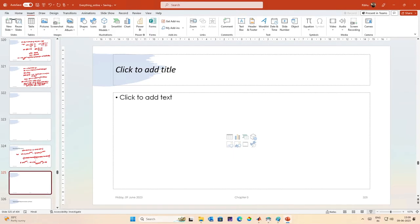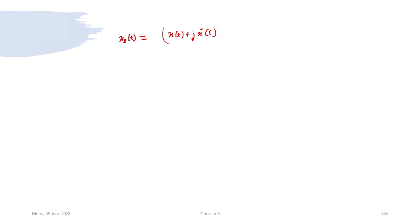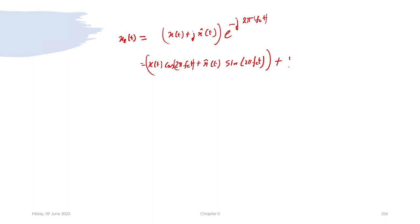This is how we define the low pass equivalent signal, but we are not done yet. x_l(t) can be written as [x(t) + j·x̂(t)]·e^{-j2πf_c·t}, which I can expand as: x(t)cos(2πf_c·t) + x̂(t)sin(2πf_c·t), minus j times [-x̂(t)cos(2πf_c·t) + x(t)sin(2πf_c·t)]... with the correction that a minus sign applies, giving the in-phase and quadrature components.